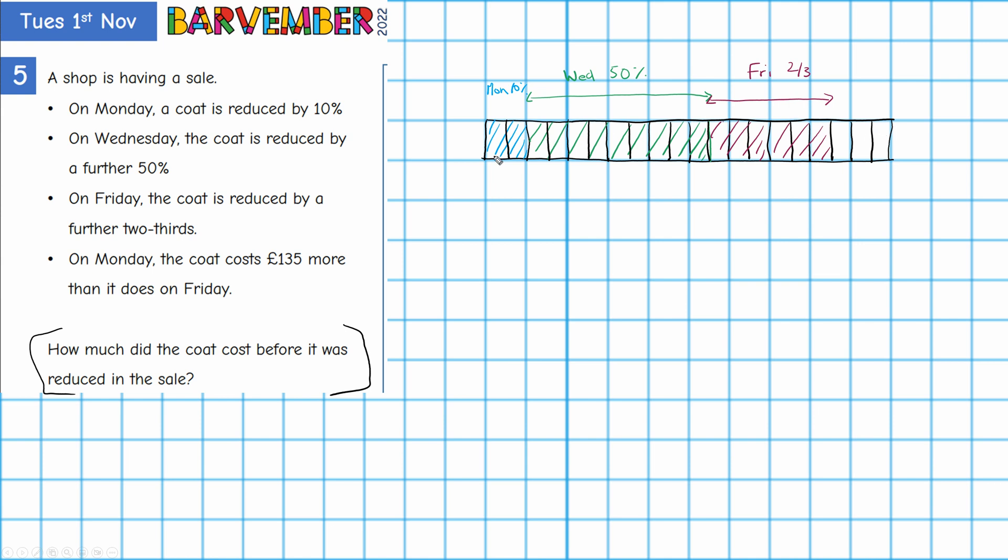Okay so let's see what we are told now. On Monday it says that the coat costs £135 more than it does on Friday. So let's think about this carefully. You do have to be a bit cautious here I think because where's Monday? Is this Monday?